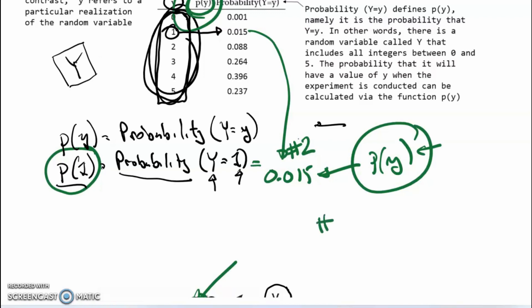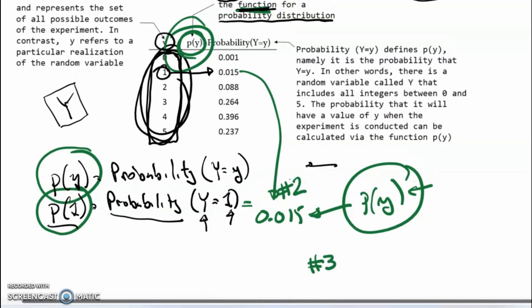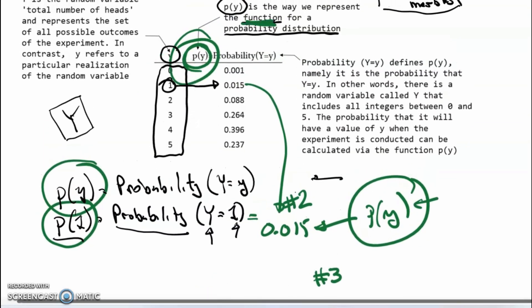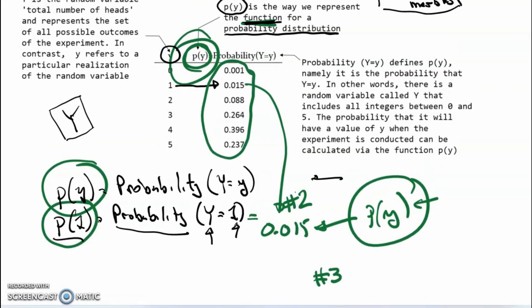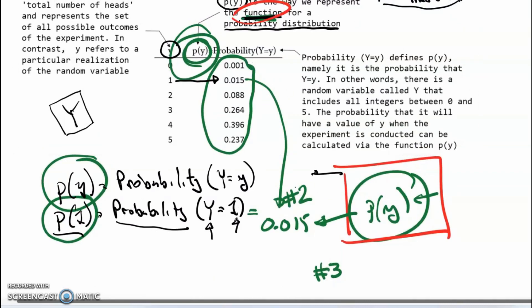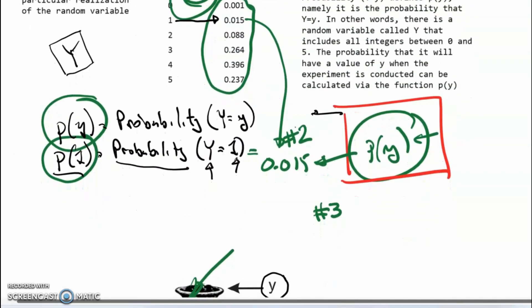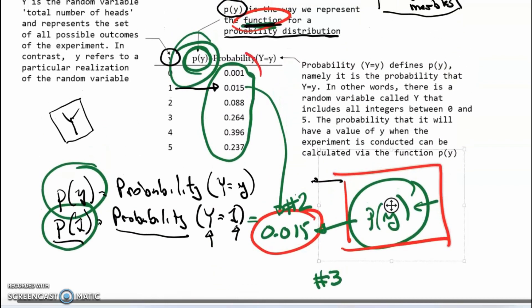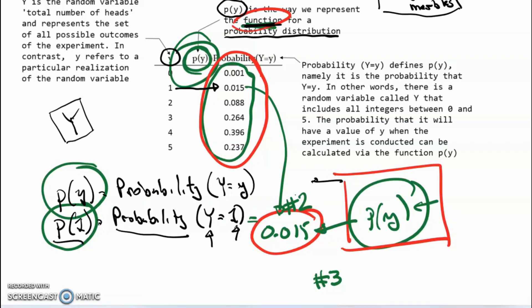There's also a third way to think about P of Y: as the set of all possible probabilities that might result. So P of Y technically is the function, but can also refer to a specific probability or the set of all possible probabilities. I'm hopeful that the meaning will be apparent from the context.